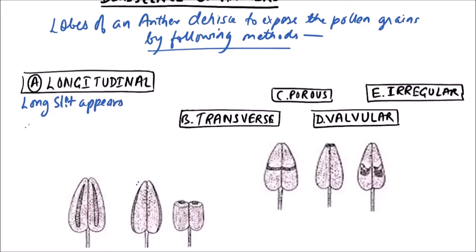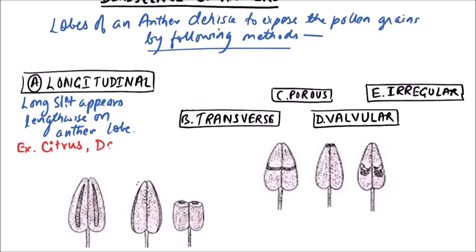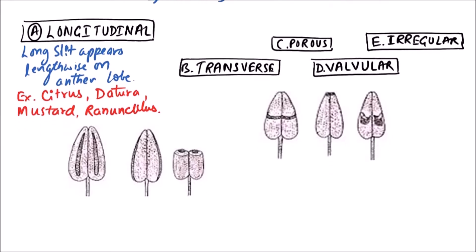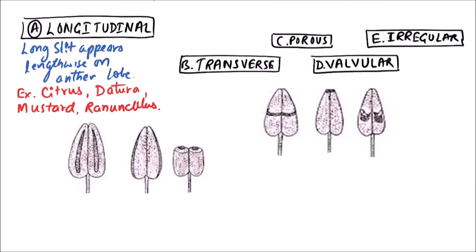In the longitudinal method, a long slit appears lengthwise on the anther lobe. The examples include citrus, datura, mustard, and ranunculus.